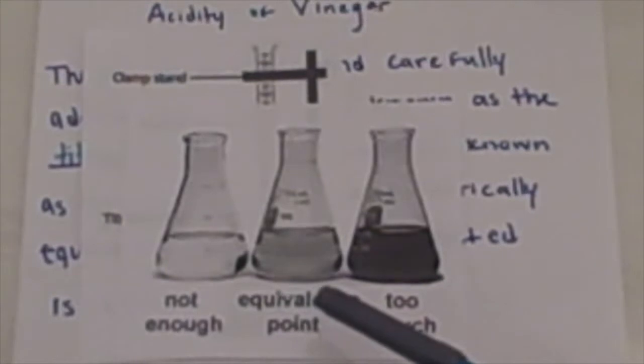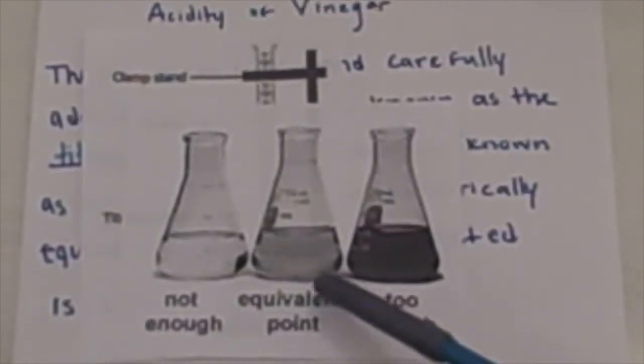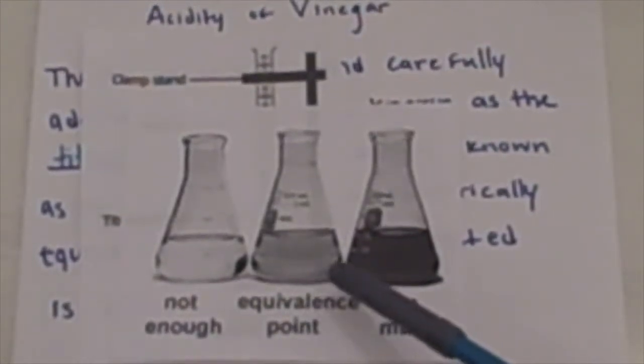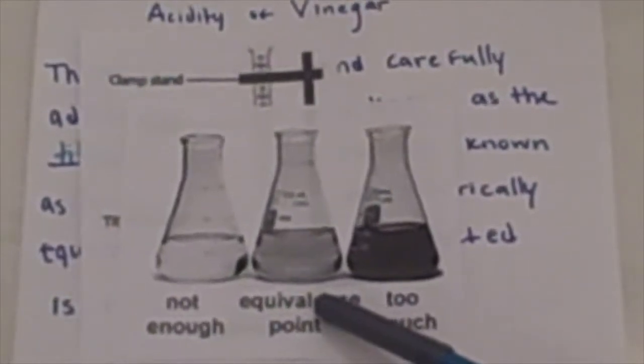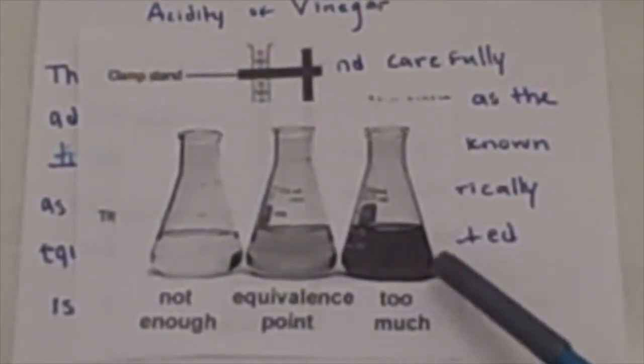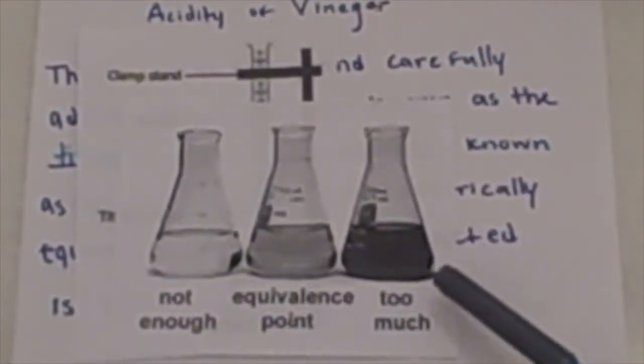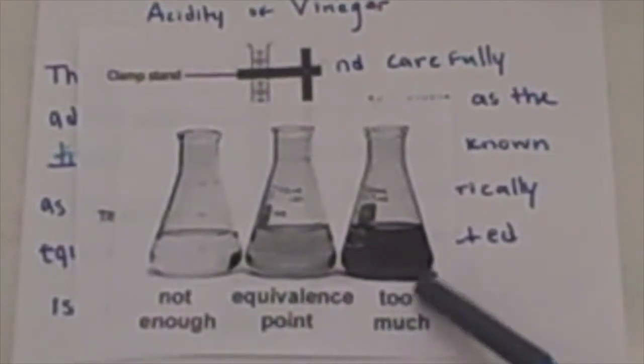You're going to be stirring it. It's going to be changing. Then once that color change stays, then you know you've hit the equivalence point. If it's too dark, like this sample here, then you know you've overshot it and you've far passed the equivalence point.